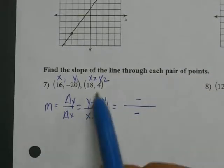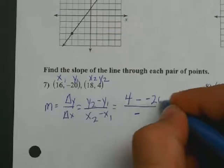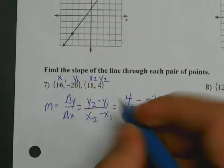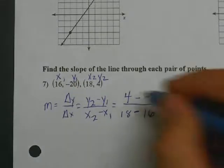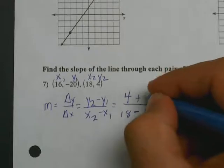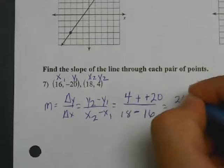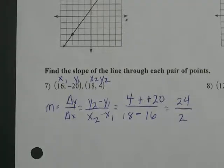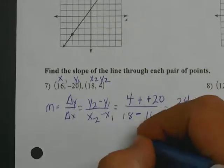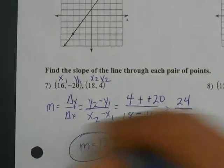Y2 is 4. So I'll put a 4 where Y2 is. Y1 is negative 20. So I'll put a negative 20 here. X2 is 18. And X1 is 16. From there, I'm going to change these two subtractions to a positive because two subtractions is a positive. 4 plus 20 is 24 over 18 minus 16 is 2. And then from there, you are going to just simply have 24 over 2, which is 12. So my final answer for this is 12. Or you could say M equals 12 for M being the slope.